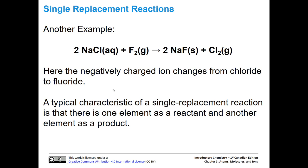Let's look at another example. We're going to trade partners. Here's our element — fluorine. Here's our compound — sodium chloride. We're going to take the sodium cation and instead of having a chloride anion, now we're going to have a fluoride anion. So we get sodium fluoride and then chlorine gas. So: old element becomes new element, old compound becomes new compound. A typical characteristic of these reactions is that there's one element as a reactant and another element as a product — on each side of the equation, there's an elemental form of a substance.